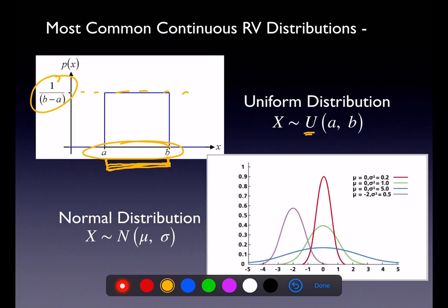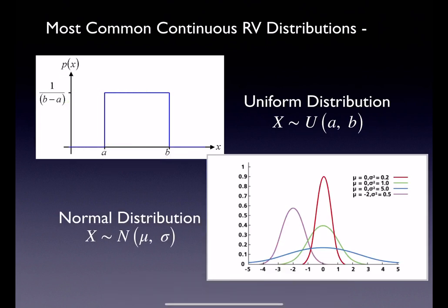In terms of the normal curve, take a look at those four normal distributions. Between the red, green, blue, and purple, which one is the standard normal curve? One of those four is the standard normal curve. Let's break this down — which one is it?